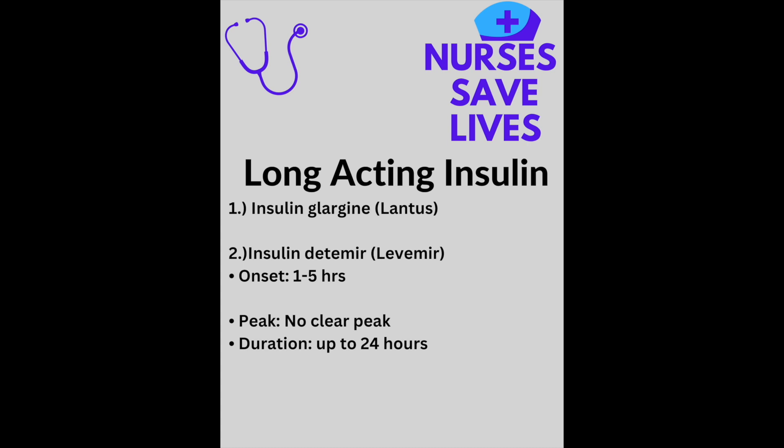Our final type is long-acting insulin. We have insulin glargine, also known as Lantus, and insulin detemir, also known as Levemir. They have an onset of 1 to 5 hours, no clear peak, and a duration of up to 24 hours — that's why it's called long-acting. The way to remember these: long-acting are the L's — Lantus and Levemir.